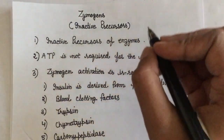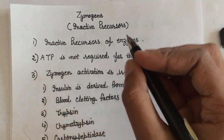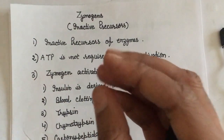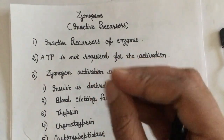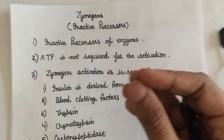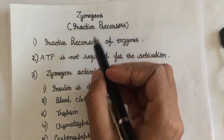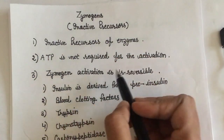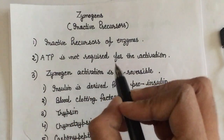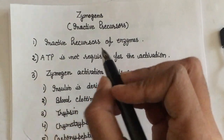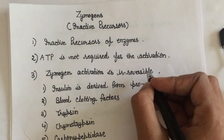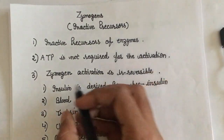Many enzymes are not synthesized as active enzymes — they need to be activated. There is a specific protein part in that zymogen or inactive precursor which needs to be degraded or removed to become functional. In the case of zymogens, activation is irreversible, and they are activated by proteolytic cleavage, which is the cleavage of one or a few specific peptide bonds.